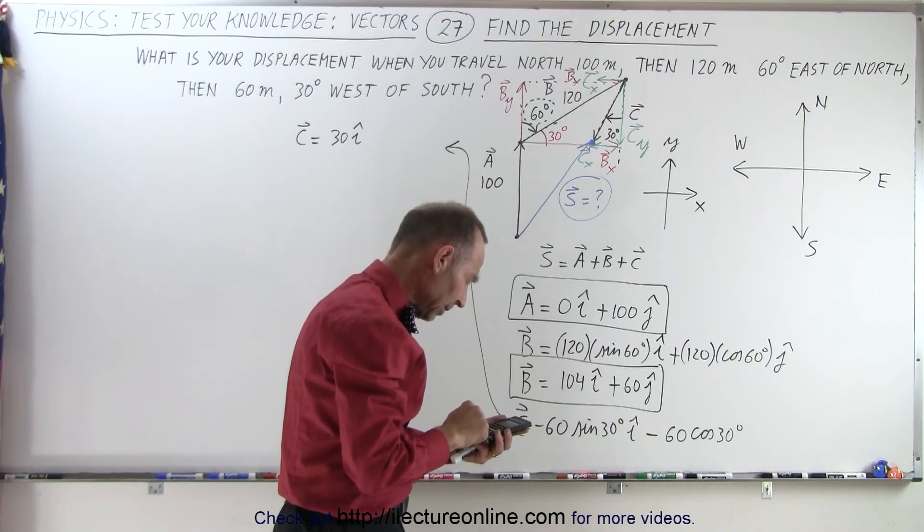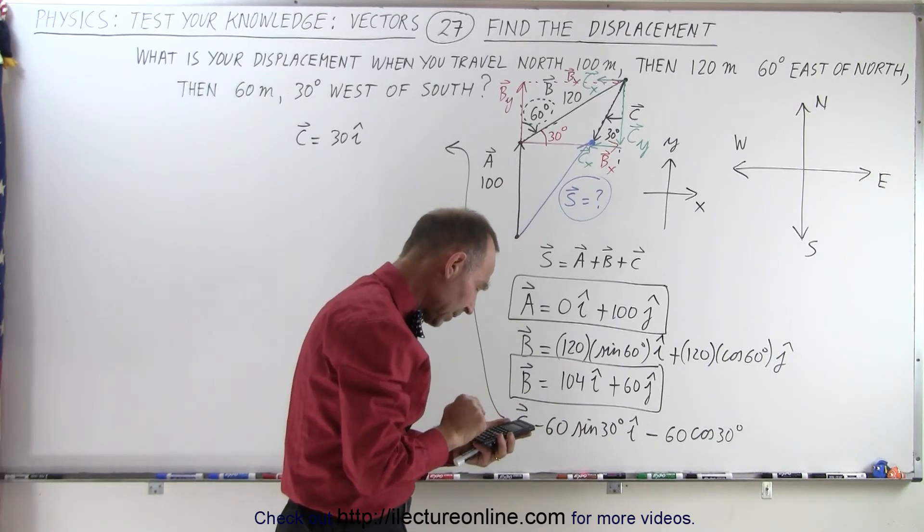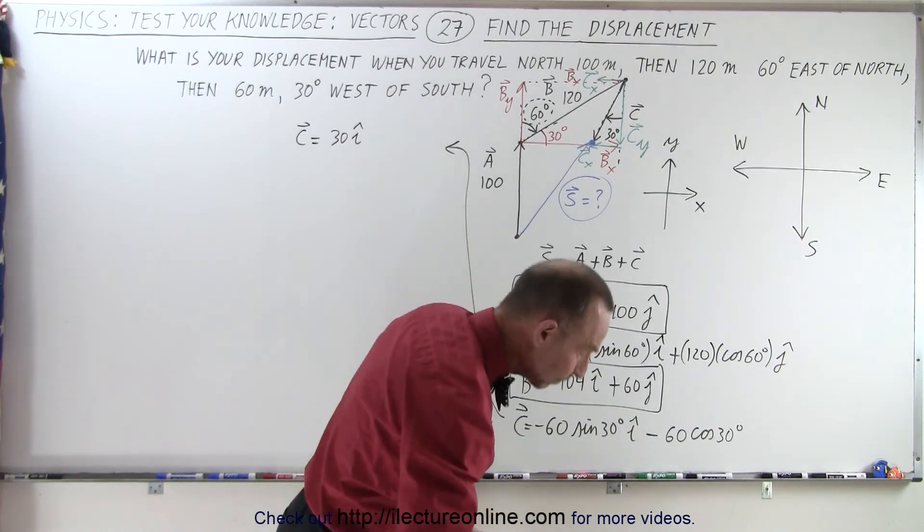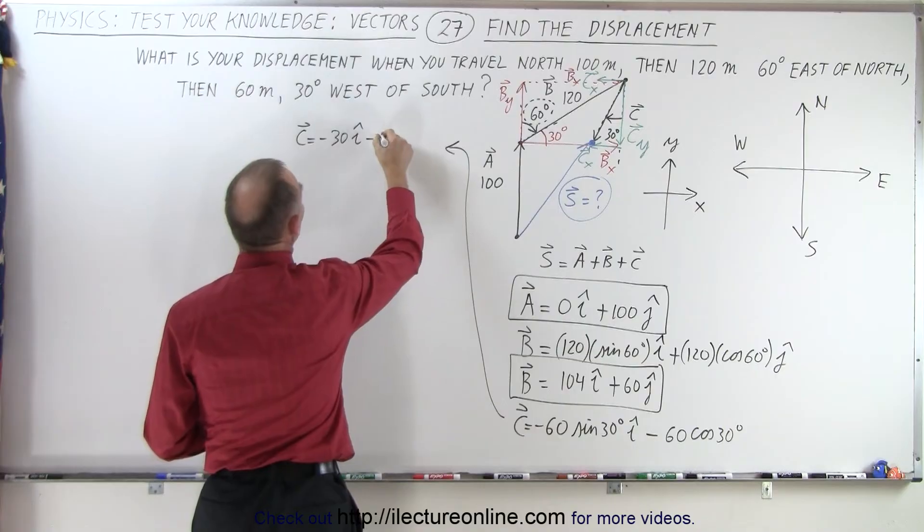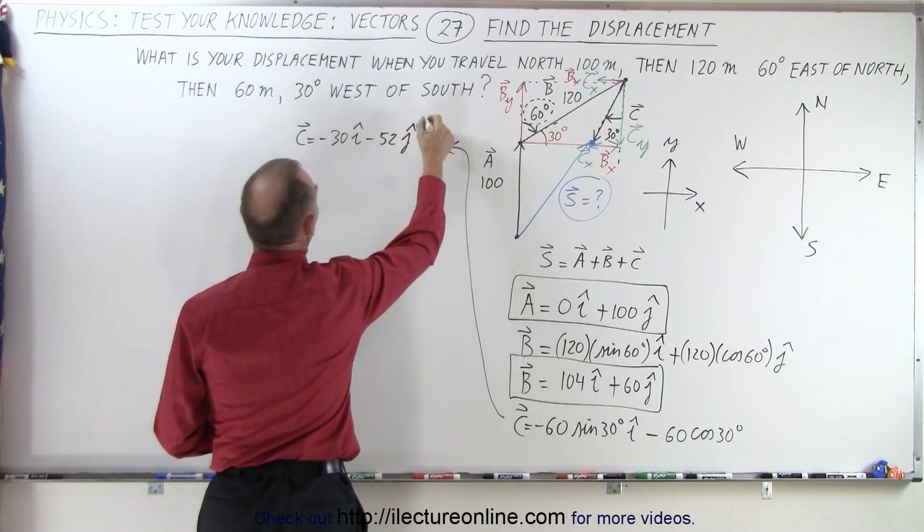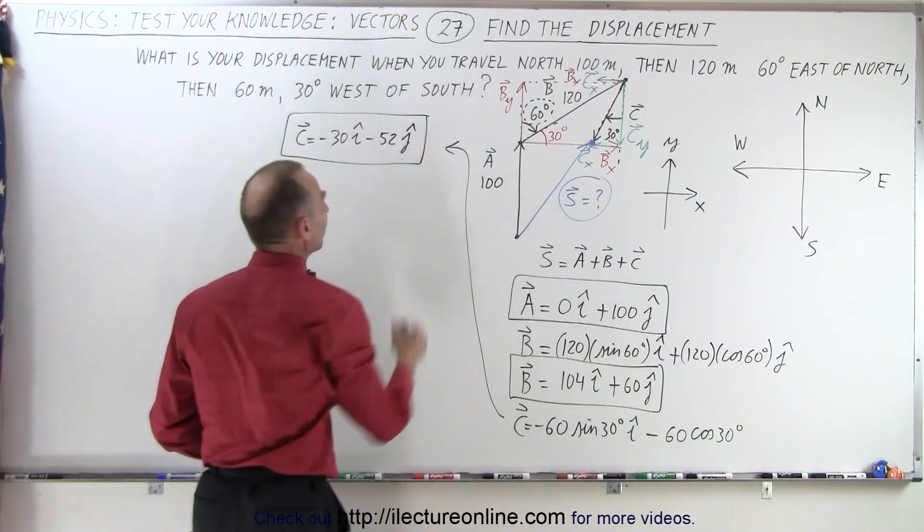30, take the cosine of that, times 60, and we get about 52. That would be, again, a minus 30 and a minus 52 in the J direction. So now I have all three vectors, and we realize that the resultant vector is simply going to be the resultant,